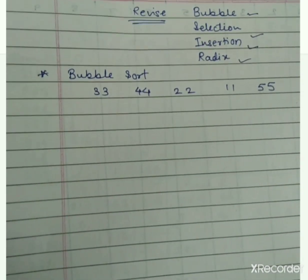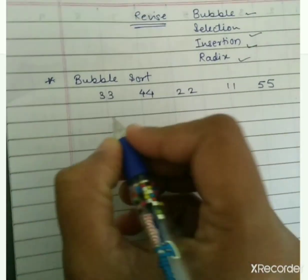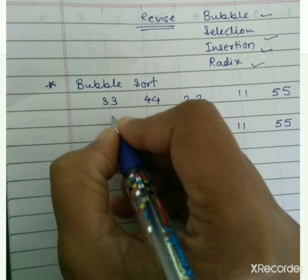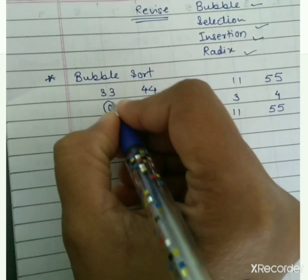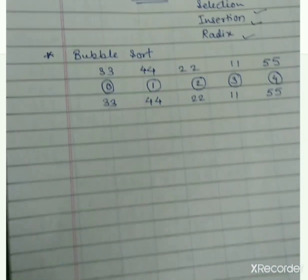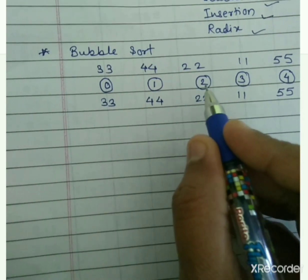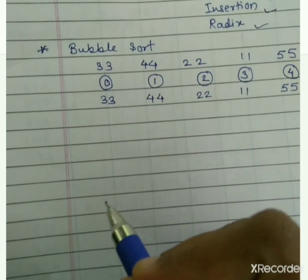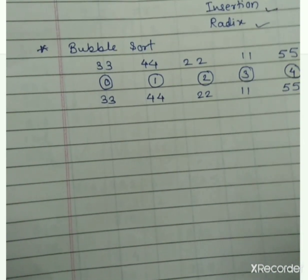When implementing bubble sort and all sorting techniques, we are using array implementation. The elements we want to sort are at array positions 0, 1, 2, 3, 4. In bubble sort, we compare the 0th element with the first, first with the second, second with the third, and third with the fourth. If the sequence is not in proper position, we have to interchange those elements.